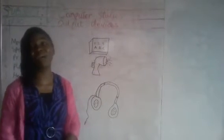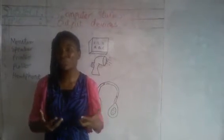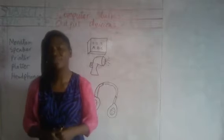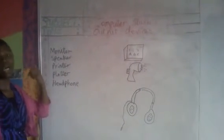Output devices are those devices that produce the results of what we are doing or what we want to hear. Now let's make a list of other output devices. Monitor is a typical example of an output device. When you are drawing, you see it on your screen. When you are typing, you see it on your monitor. Whatever you are doing, you see it on your monitor — that's why it is called an output device.